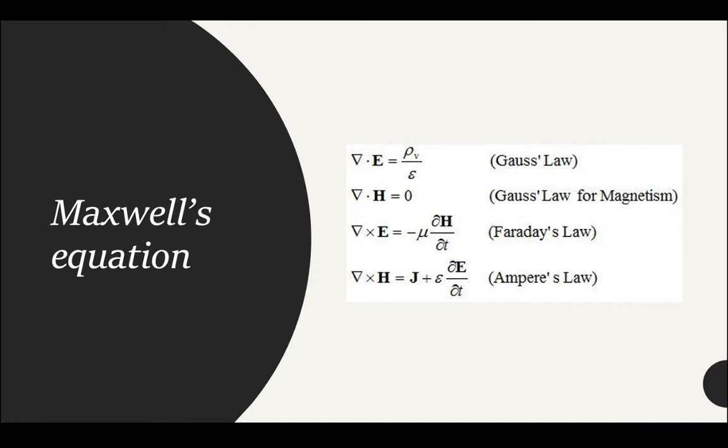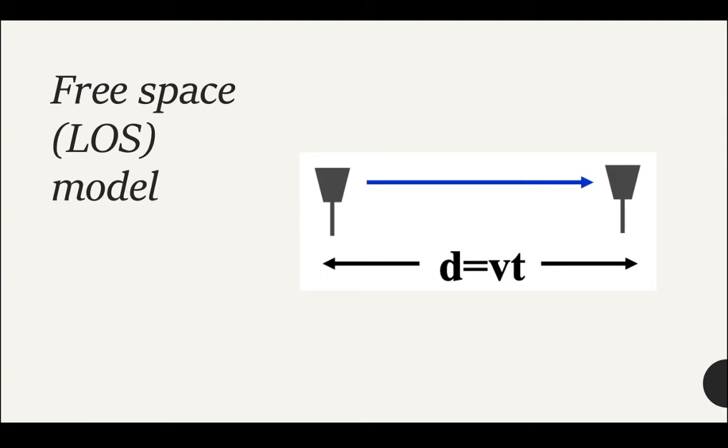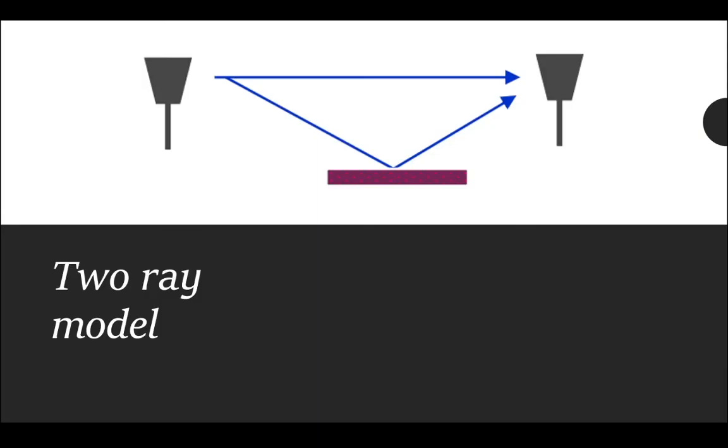The next one is free space line of sight model. It's a straightforward model with the transmitter transmitting straight forward towards the receiver, as you can see with the blue line. Line of sight means there are no obstructions in the path whatsoever. The next model is the two ray model, which involves reflection of signal from a certain object. However, the two previous models are quite unrealistic because when propagating signals in real life, there would be many objects obstructing the path over long distances, unless used for a simple system.